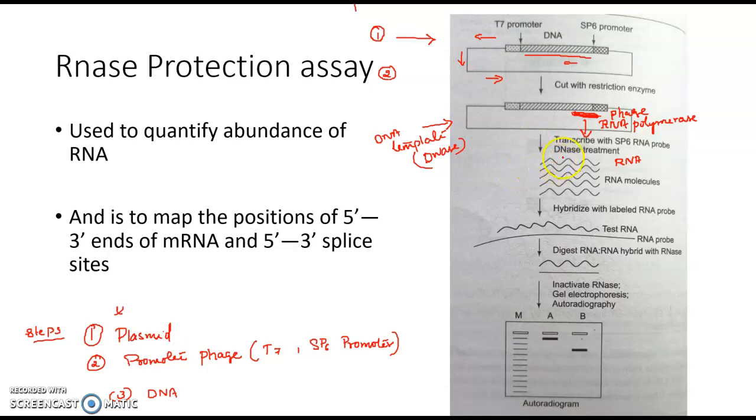After that we have to hybridize the labeled RNA probe. So in this RNA, one of the RNA is needed for us, so we have to detect which RNA is that. And we are hybridizing a known RNA with probe so that it will make an RNA-RNA hybrid. So in this step we got RNA and RNA with probe, so RNA-RNA hybrid is formed.